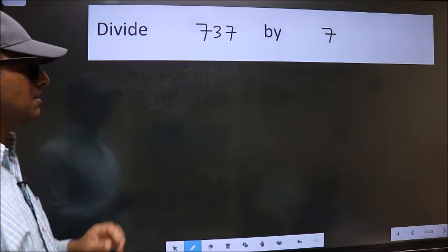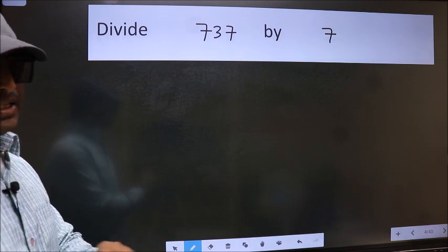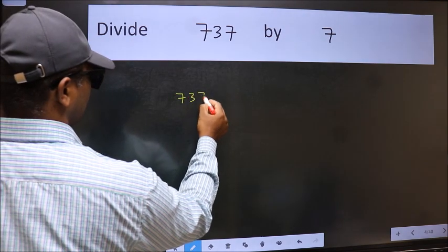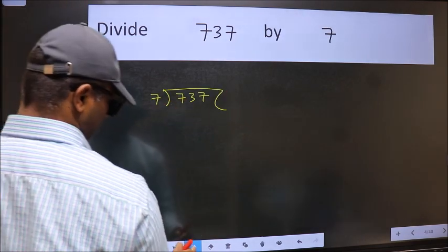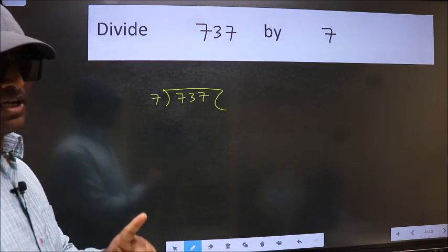Divide 737 by 7. To do this division, we should frame it in this way: 737 here and 7 here. This is your step 1.